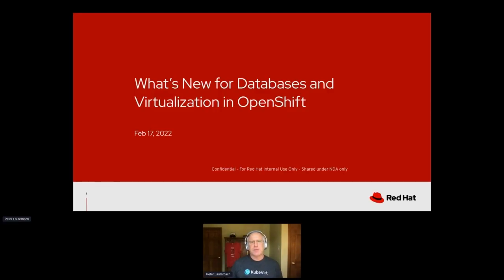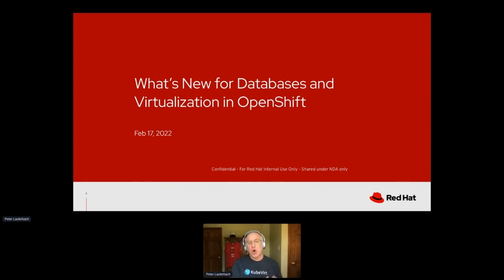By way of introduction, my name is Peter Lauterbeck. I'm one of the product managers — if you know OpenShift, there's probably about 45 of my closest colleagues that manage different parts of it. I'm responsible for a couple of different things at Red Hat: one is RHV, the Red Hat Virtualization, which is our traditional virtualization platform; OpenShift on RHV, which is the ability to run the container platform on traditional infrastructure; and OpenShift Virtualization, which is the ability to run VMs inside of OpenShift.